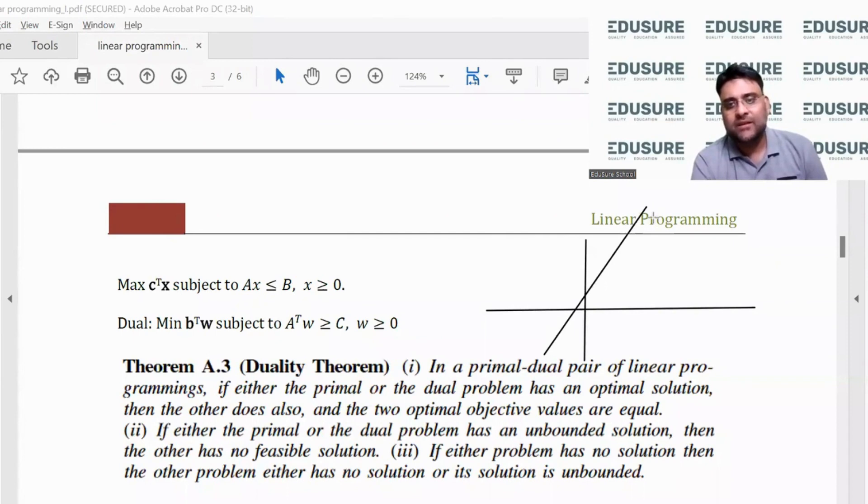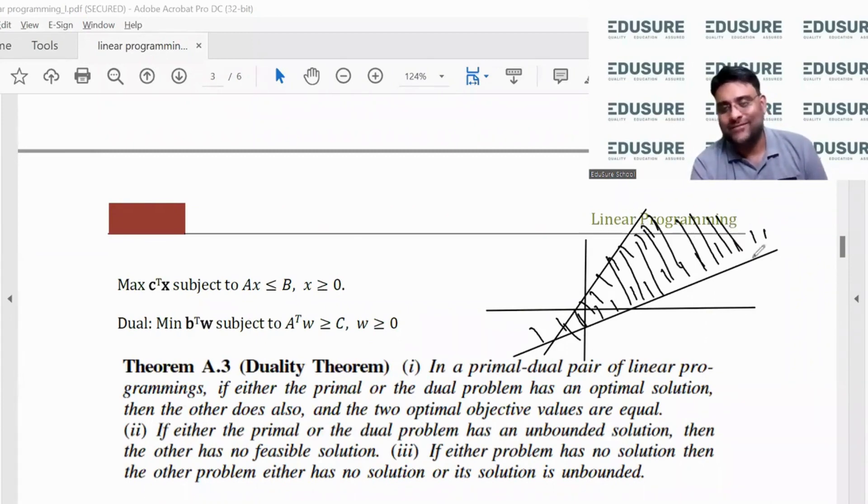Pardon my drawing again. Let's take a similar example. You can see that the common area is huge and there is no end to the common area. So this entire area going up to infinity is the basic feasible region or the BFR.